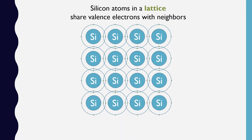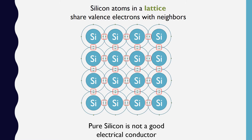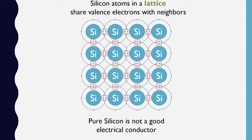If we arrange silicon atoms in a lattice in which multiple covalent bonds exist, all neighbors share valence electrons. Since all electrons are used in this structure, pure silicon is a poor conductor of electricity. But computers need electricity to work, so how do we achieve this?